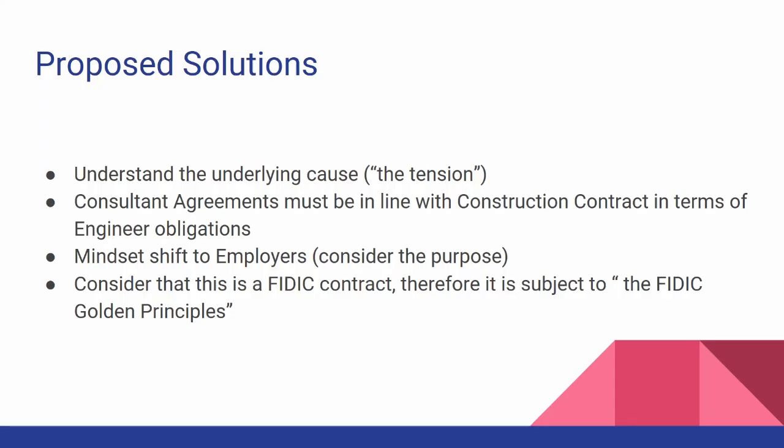What are the proposed solutions? The first solution is that we must understand the underlying cause and cannot ignore the consultancy contracts. The consultancy contract must have provisions that the engineer has to be impartial, fair, or neutral, and must be drafted accordingly — whether by business development teams or top management. This also entails a mindset shift for employers: the engineer is not there to defend the employer, but to defend the project, acting in the best interest of the project. Everyone benefits when the project completes on time and within budget, with legal fees and arbitration expenses minimized.